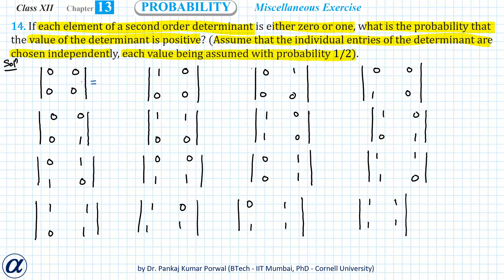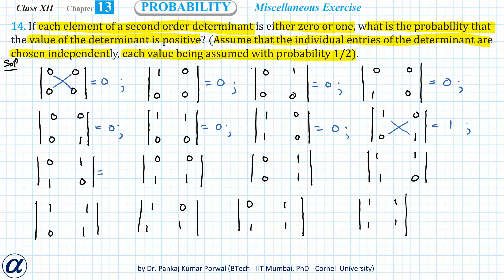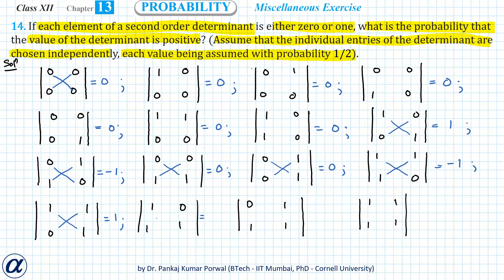Now let's find the values of all determinants. For 0 0 0 0, the value is 0. For matrices with a single 1, the determinants are all 0. For 1 0 1 0, the value is 0×0 − 1×1 = −1. For 0 1 0 1, the value is 0×1 − 1×0 = 0. For 1 0 1 0 the value is 1×0 − 1×1 = −1. For 1 1 0 0 the value is 1×0 − 1×0 = 0. For 1 0 0 1, the value is 1×1 − 0×0 = 1. For 0 1 1 0, the value is 0×0 − 1×1 = −1. For 1 1 1 1, the value is 1×1 − 1×1 = 0.